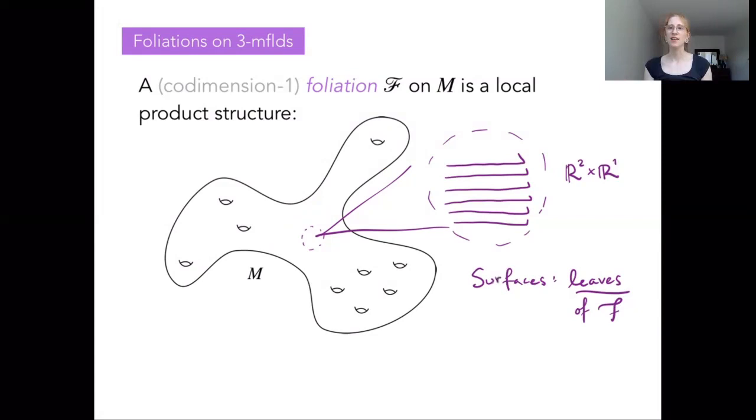So why are we interested in studying a foliation? The idea is that this gives our manifold M more structure. It lets us view M not just as this floppy 3-manifold, but as something that's actually comprised of this family of surfaces. And we can then use tools and techniques from the study of surfaces and surface topology to get better leverage towards understanding our manifold itself.